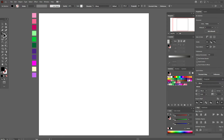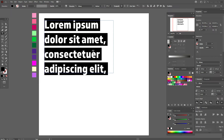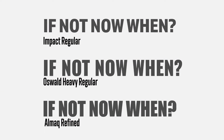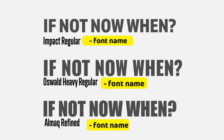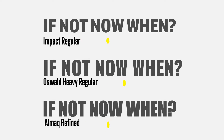Now select the text tool. Hold and drag. I used here Almark Refined. The size is 100. And some words about fonts — you need to use bold and simple fonts. They work better for this tutorial.